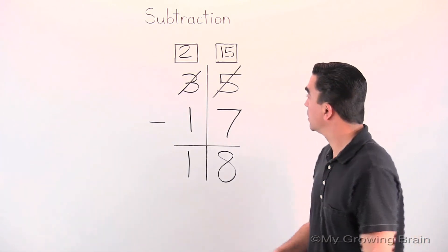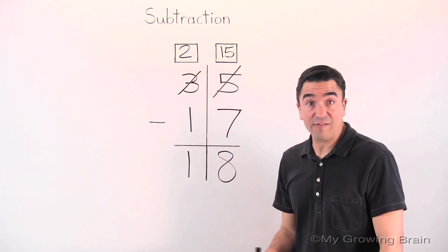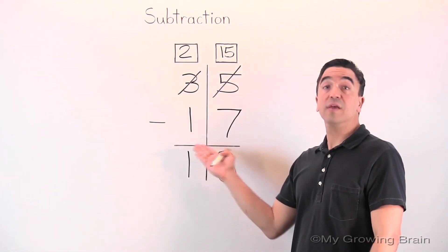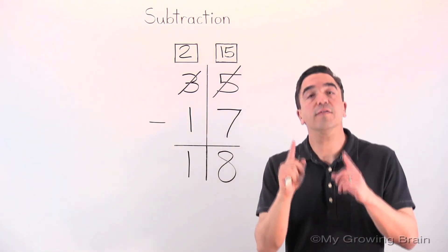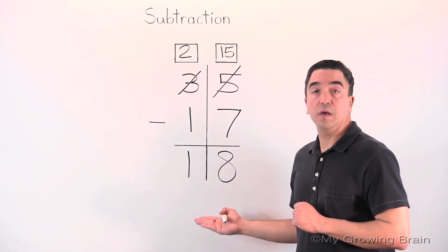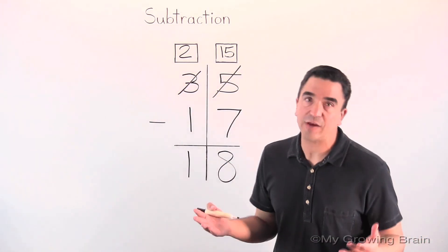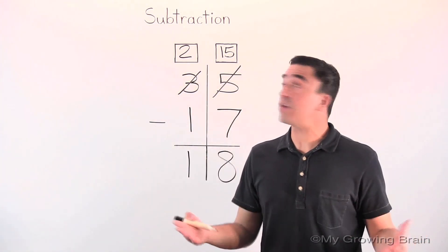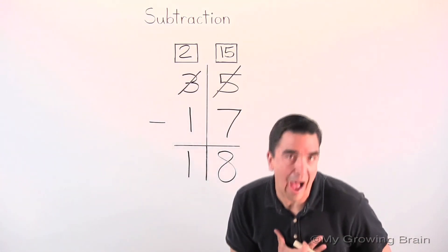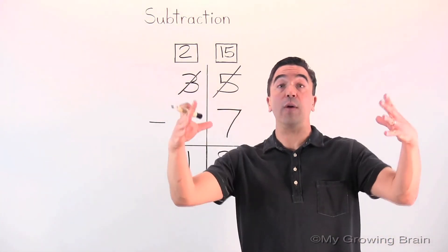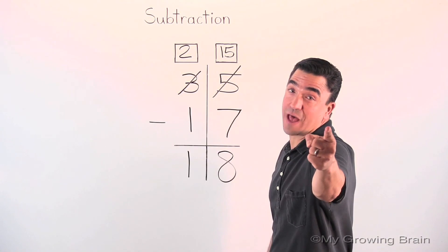So, 35 minus 17 gives us a difference of 18. Don't forget, the difference is the answer to a subtraction problem. That concludes our lesson on subtraction. Coach Mike at My Growing Brain Challenge Yourself.